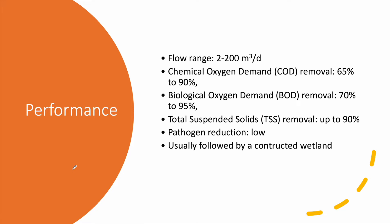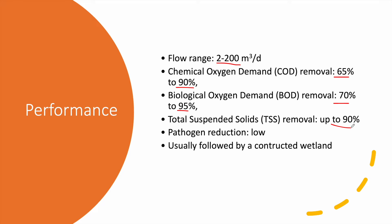An ABR is used for small to medium scale projects with a flow range of 2 to 200 cubic meters per day. It achieves a high removal of organic matter: COD removal of 65 to 90 percent, BOD reduction of 70 to 95 percent, and up to 90 percent removal of total suspended solids. Pathogen reduction is low, so tertiary treatment — disinfection through chlorination or UV — is needed, and the ABR is usually followed by a constructed wetland.